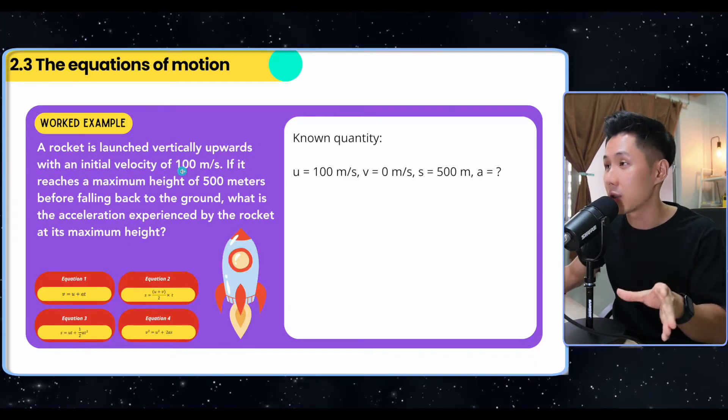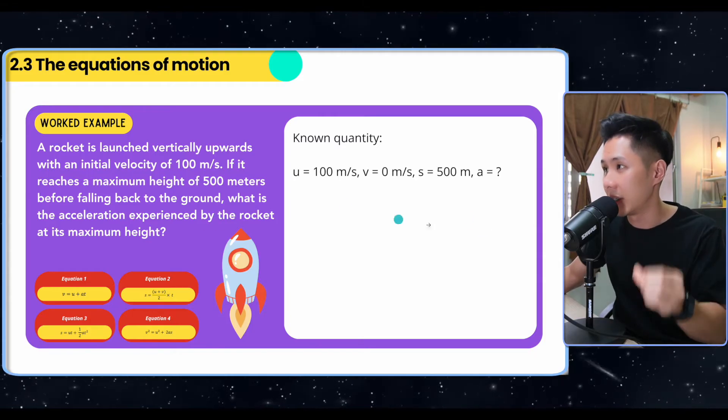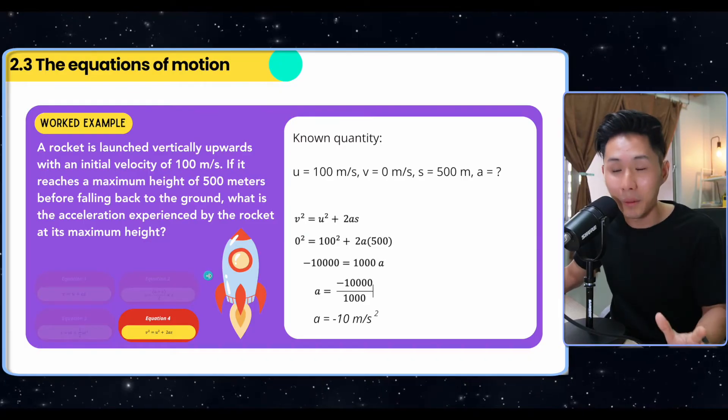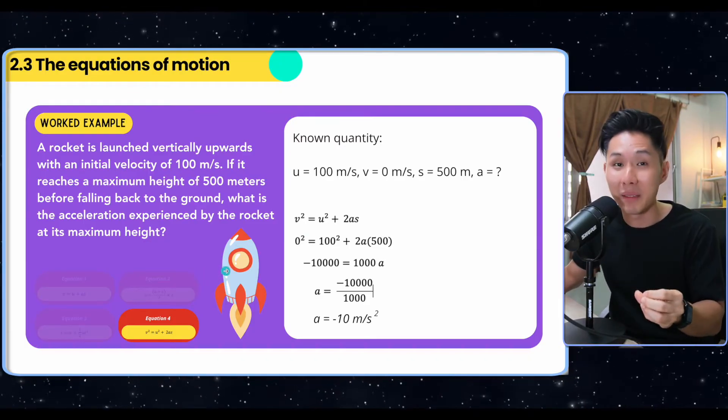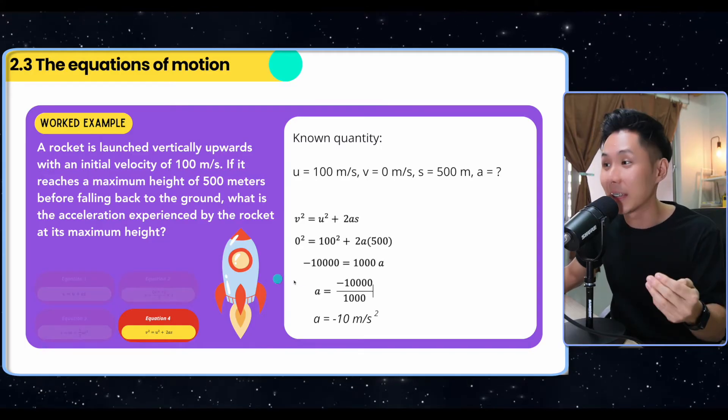Lastly, you have initial velocity, maximum height, acceleration experienced, and the distance. So in this case, I'll use equation four. Again, nothing difficult. What's difficult for some of you might be how are you going to memorize the four formulas. So that's something that you need to do.